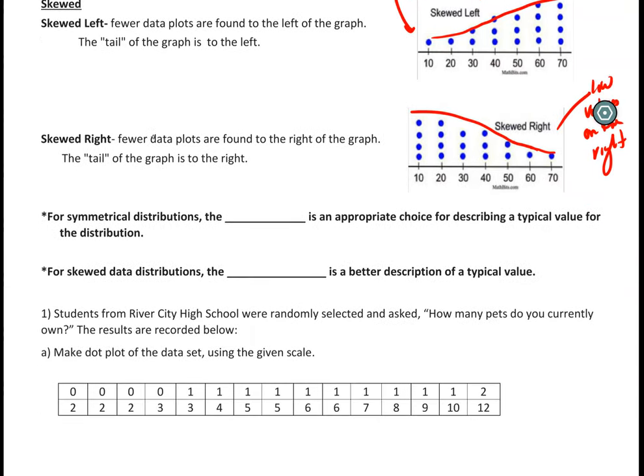So two important things to note. If the information is symmetrical, then usually the most appropriate way to represent that data would be the mean or the average. And if it's skewed data, then the best way to describe that typical value is going to be the median. So if you can understand what type of data and how it's being distributed, it gives you a good representation as to which one of these two things to use.